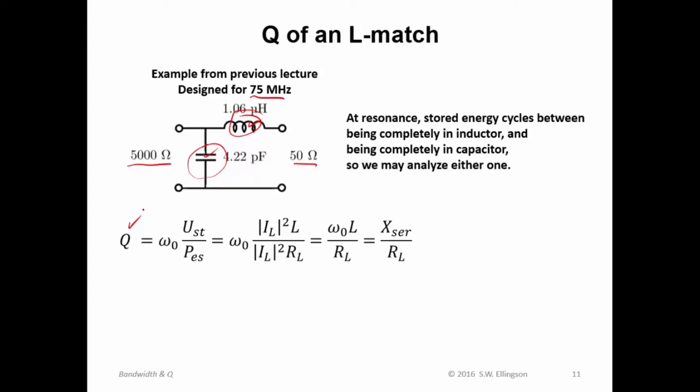Q, by analysis we just showed on the previous page, is omega naught, that's 2π, times the frequency of resonance, times energy stored, divided by power escaped, the power that manages to get out of the 2 port.